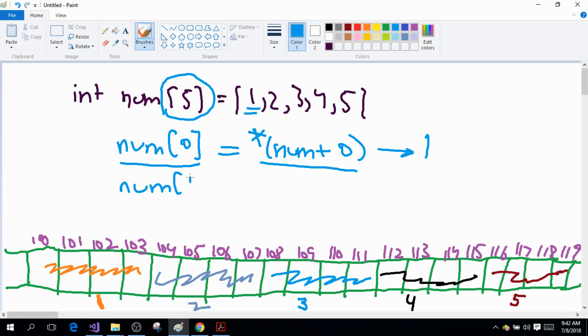It will add 1 to the address of the first element of the array, which will give me 104, the address of the second element of the array. And dereferencing it will give me the value 2.